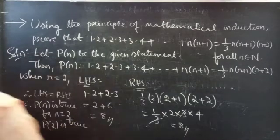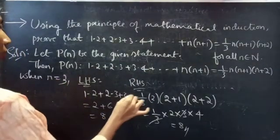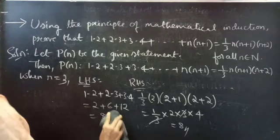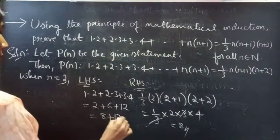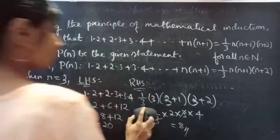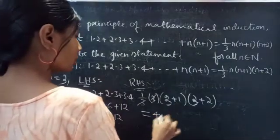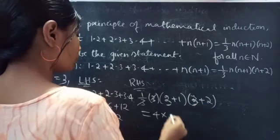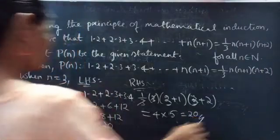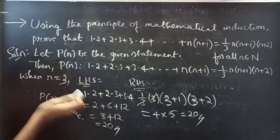Likewise, check for n=3. Take the first three terms: 1·2 + 2·3 + 3·4 = 2 + 6 + 12 = 20. For RHS, put n=3: (1/3)·3·(3+1)·(3+2) — the 3 cancels — giving 3·4·5/3 = 4·5 = 20. So LHS equals RHS, and P(3) is true.